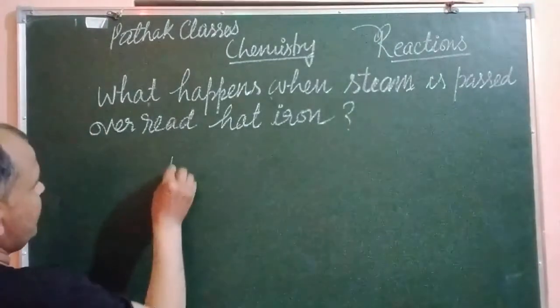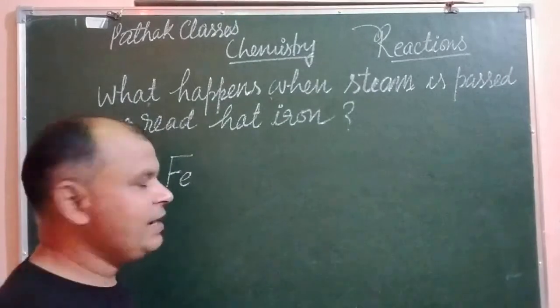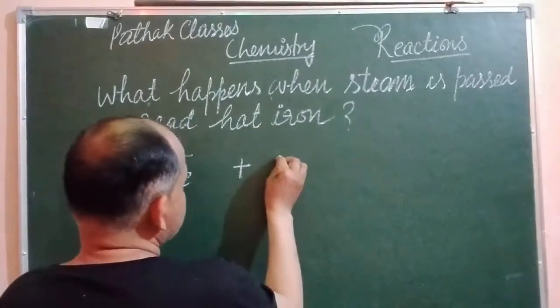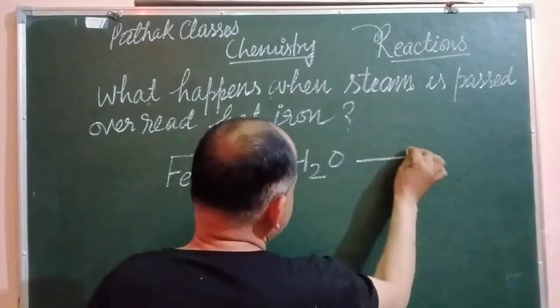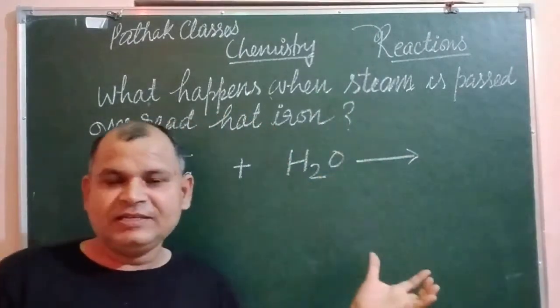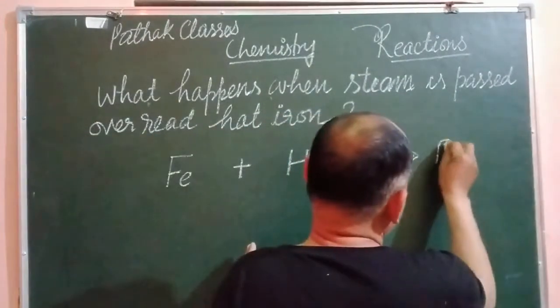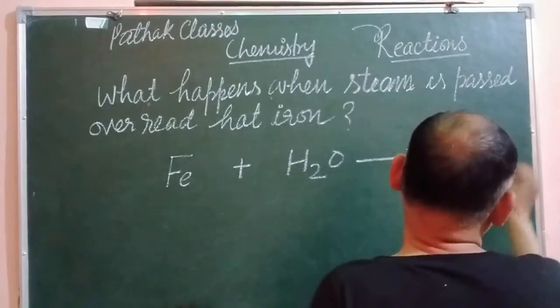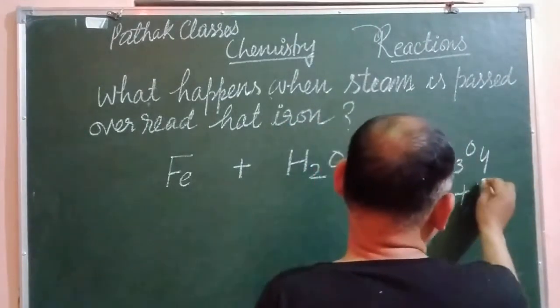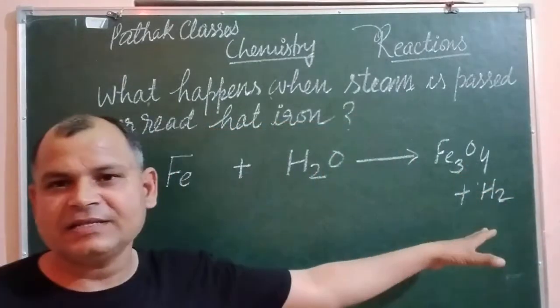So let this is Fe which is iron and steam H2O, it reacts with this steam. So gives us Fe3, Fe3O4 plus H2.